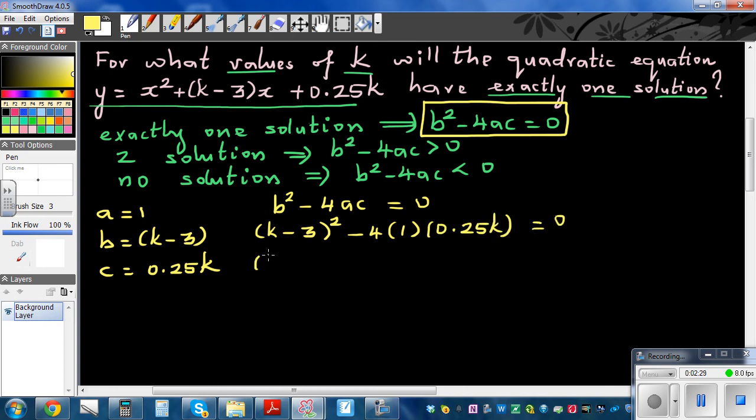So this is the same as (k - 3) times (k - 3). 4 times 0.25 is going to be 1, so this is minus k = 0. So this becomes, expanding this, k² - 6k + 9 - k = 0.